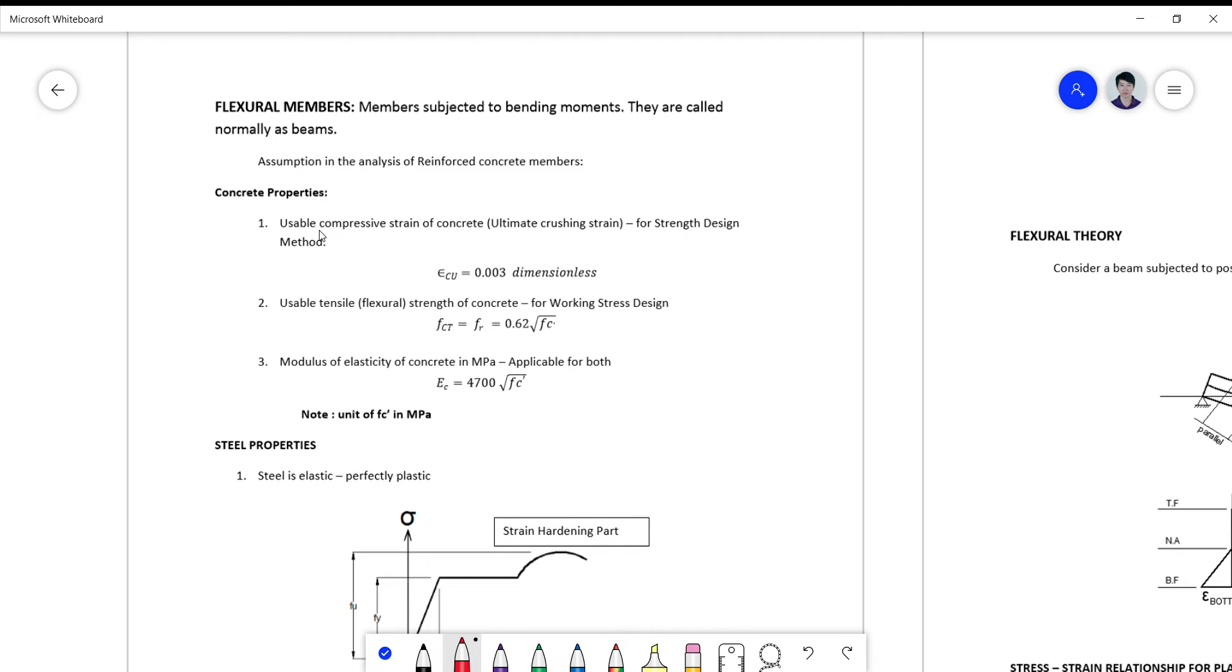This is epsilon cu equal to 0.003. You know that strain is simply your deformation over a unit length. So if we have here a unit of length in millimeters and the unit of delta in millimeters, the unit will just cancel out.